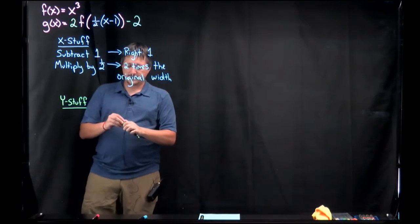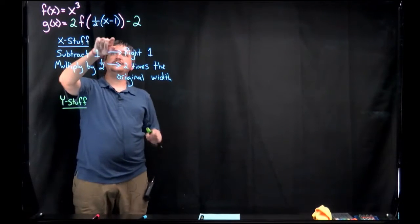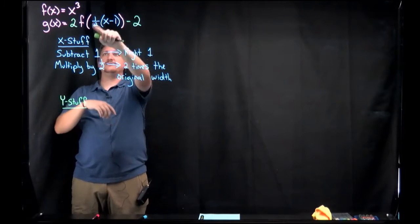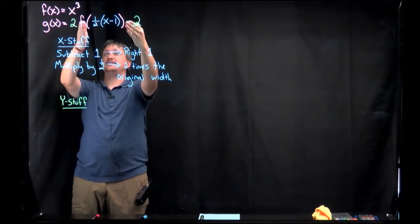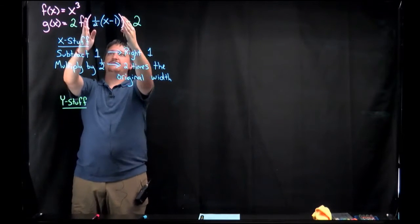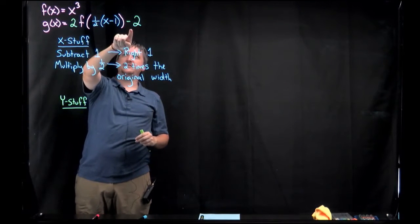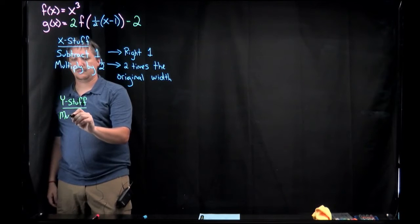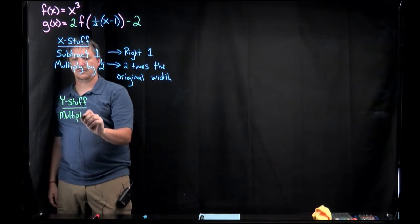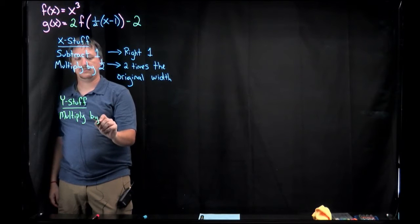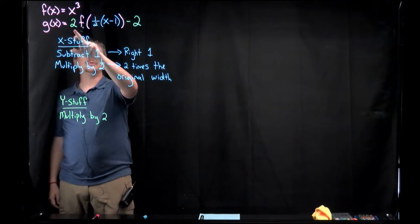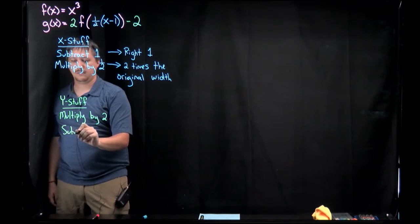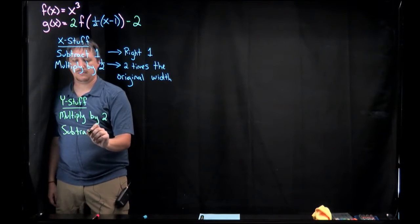Okay, now I'm going to do the same thing. So if I pretend I had calculated stuff out, I replaced this f of stuff with some number. So I did all of this stuff, I applied f, I got something like 5 at the end. Then I'd have 5 times 2, and then minus 2. So the first thing I'm going to do is multiply by 2. Then the next thing I'm going to do is subtract 2.